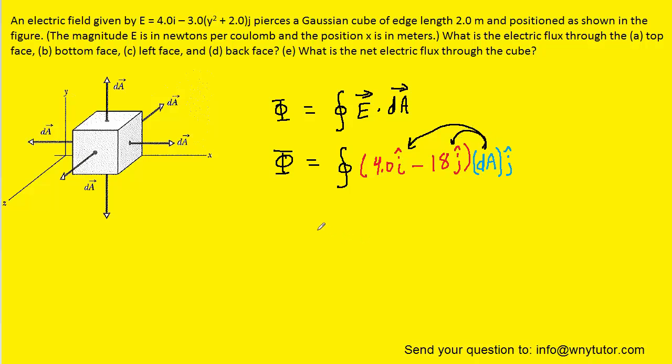Next, we will distribute into the parentheses. When we multiply a j-hat by an i-hat component, they effectively cancel each other out, so you're left with zero. When we multiply j-hat components, those cancel, so we have minus 18 times dA. Since negative 18 is a constant, we can remove it to the outside of the integral. The integral of dA is just the area itself.